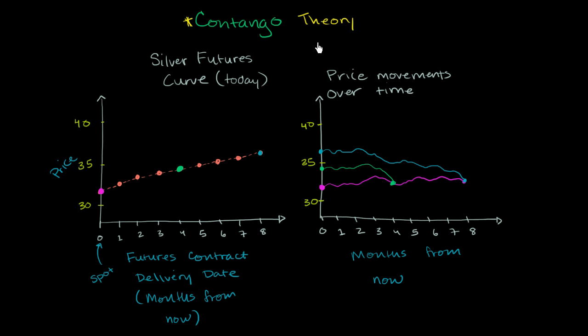And it really can't be observed. And the contango theory says that people are willing to pay more to buy some commodity in the future than the actual expected price of that commodity. So when we talk about expected price, this is a very theoretical thing.